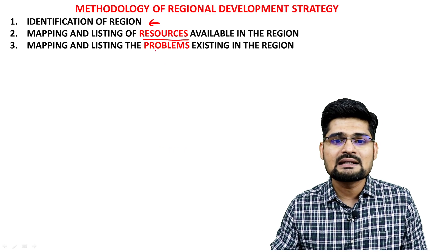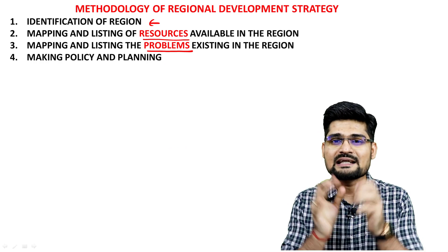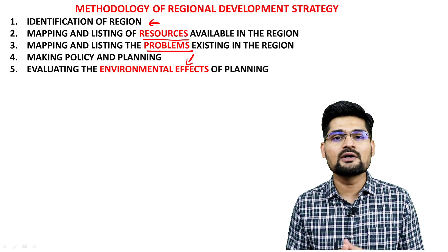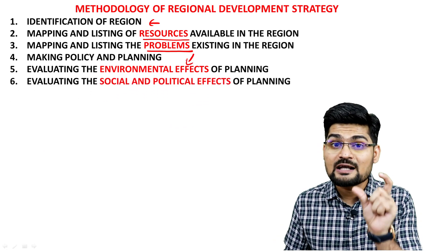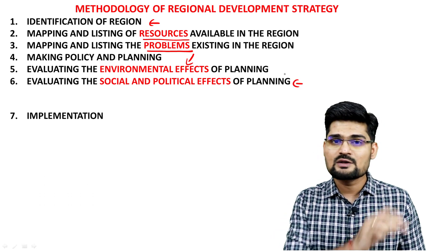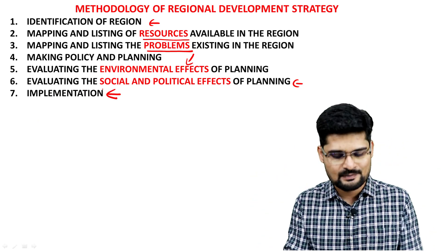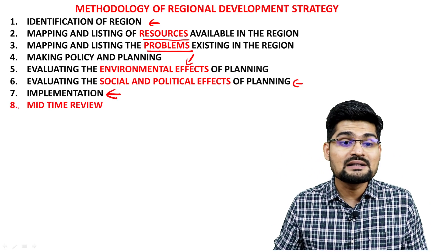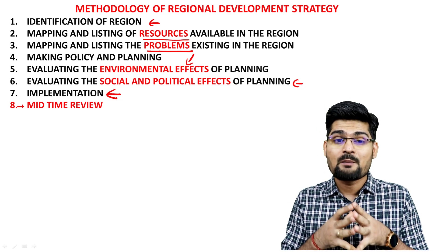Third is mapping and listing the problems in the existing region. Fourth is making policy in accordance with the problem and planning. Fifth is looking into environmental effects in terms of the planning of that particular policy. Sixth is evaluating the social and political effects of that particular planning. Seventh is implementation of the entire plan. After implementation, a mid-term review of the implemented program is also part of the methodology.